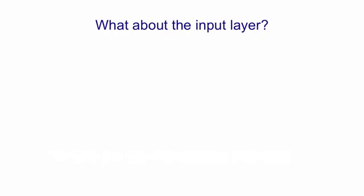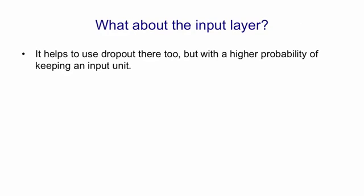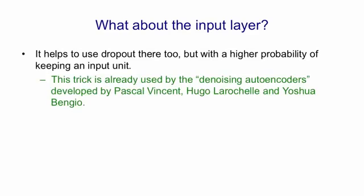What about the input layer? Well, we can use the same trick there, too. We use dropout on the inputs, but we use a higher probability of keeping an input. This trick's already in use in a system called denoising autoencoders, developed by Pascal Vincent, Hugo Larochelle, and Yoshua Bengio at the University of Montreal, and it works very well.